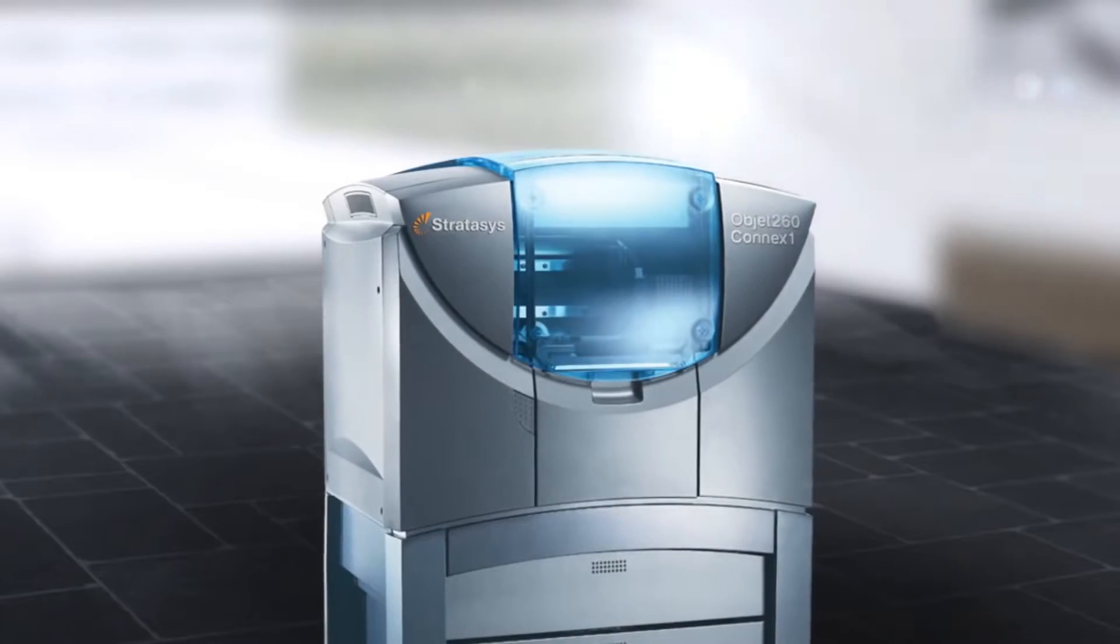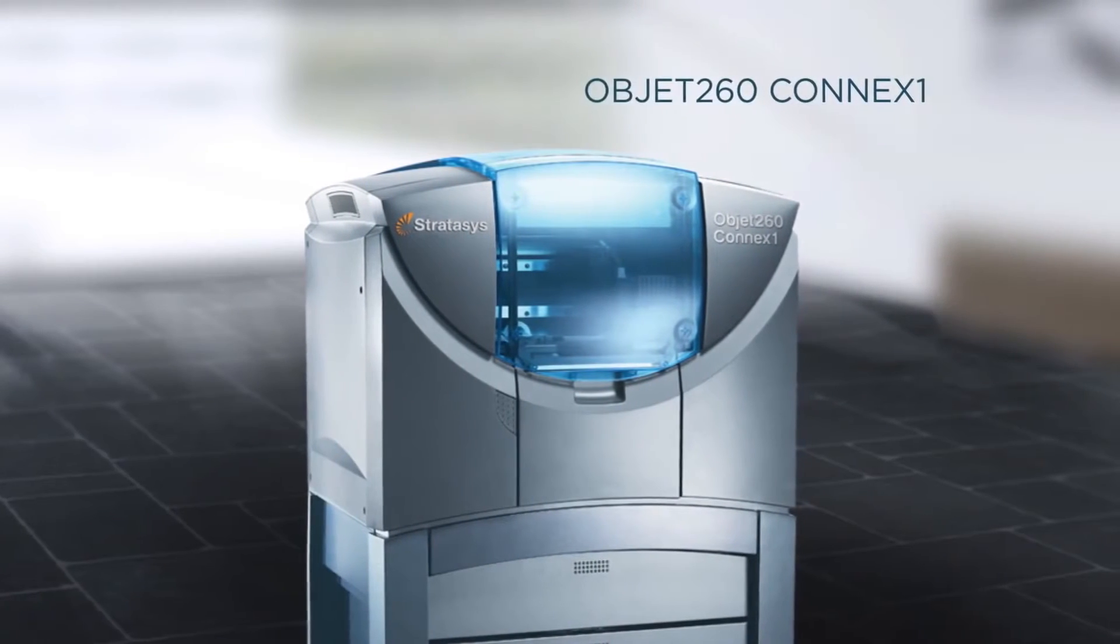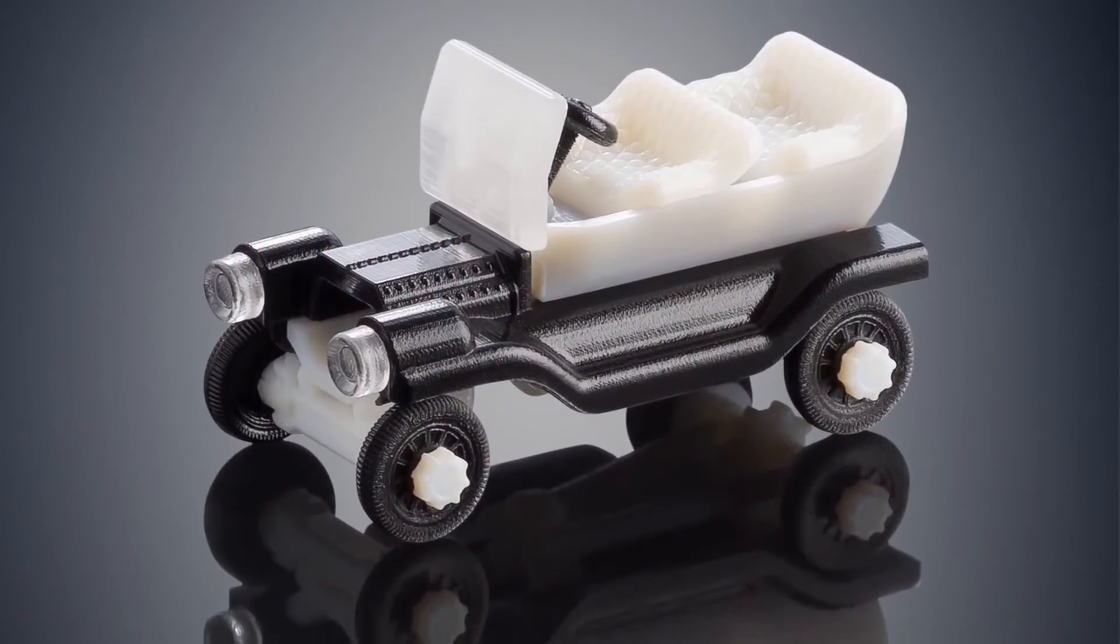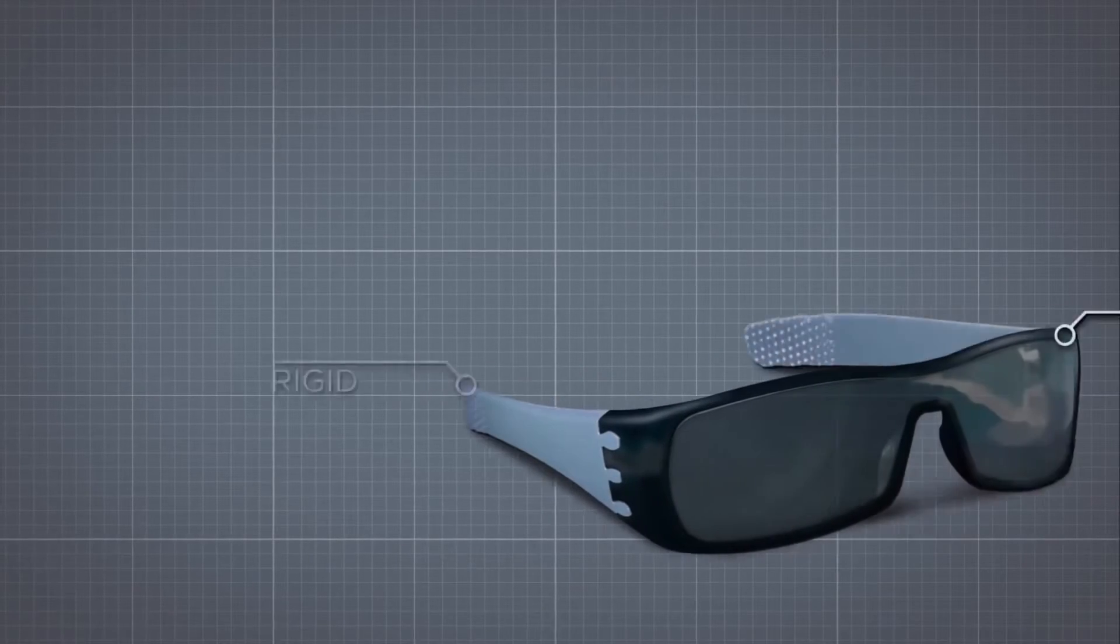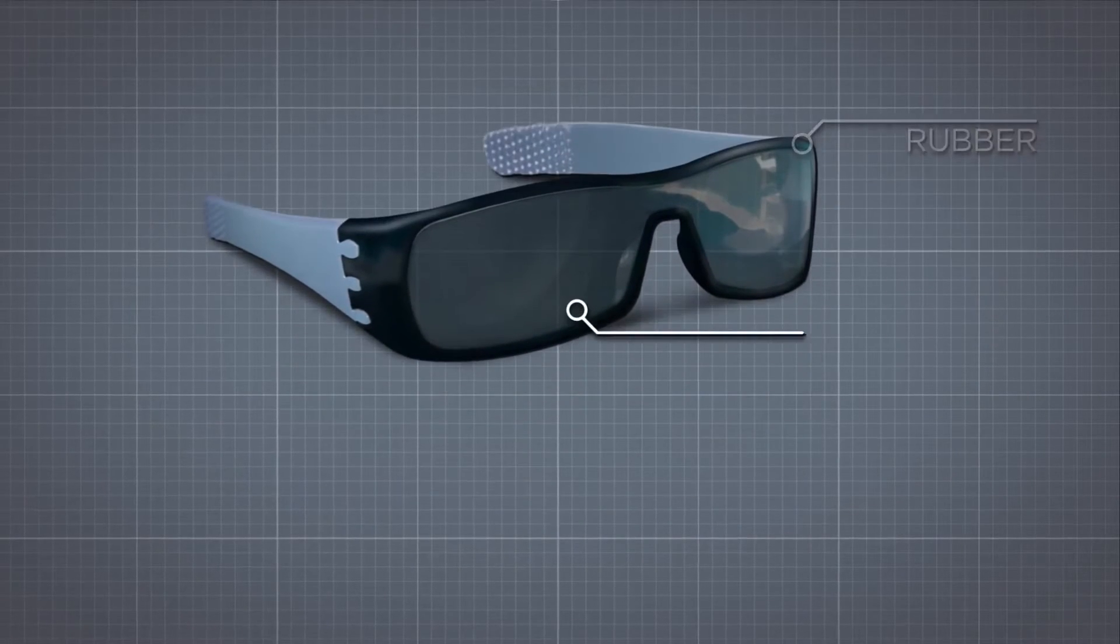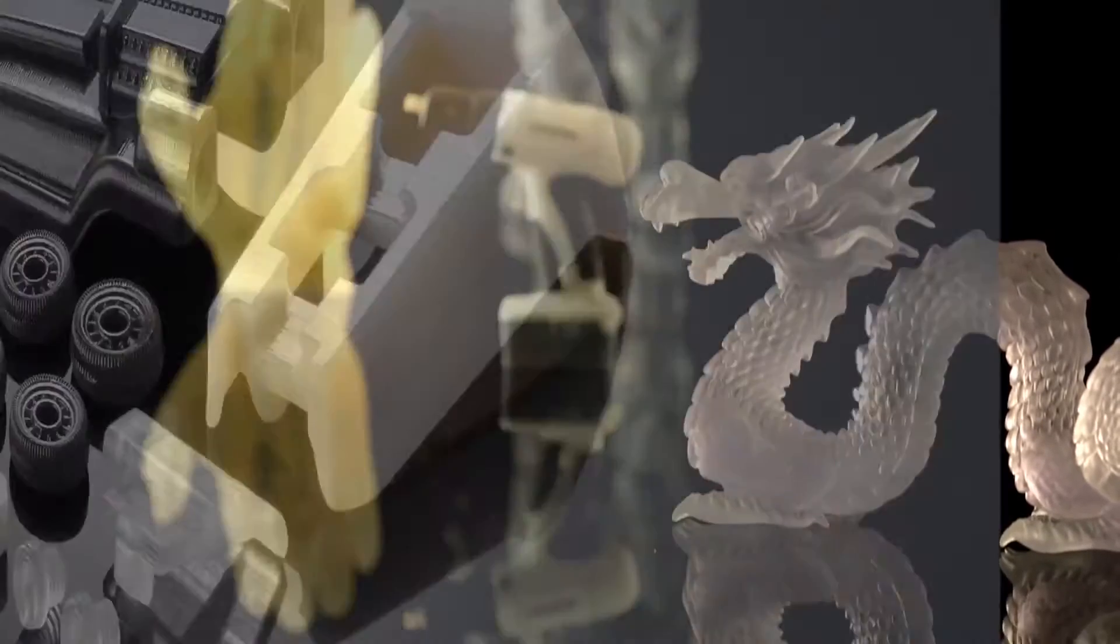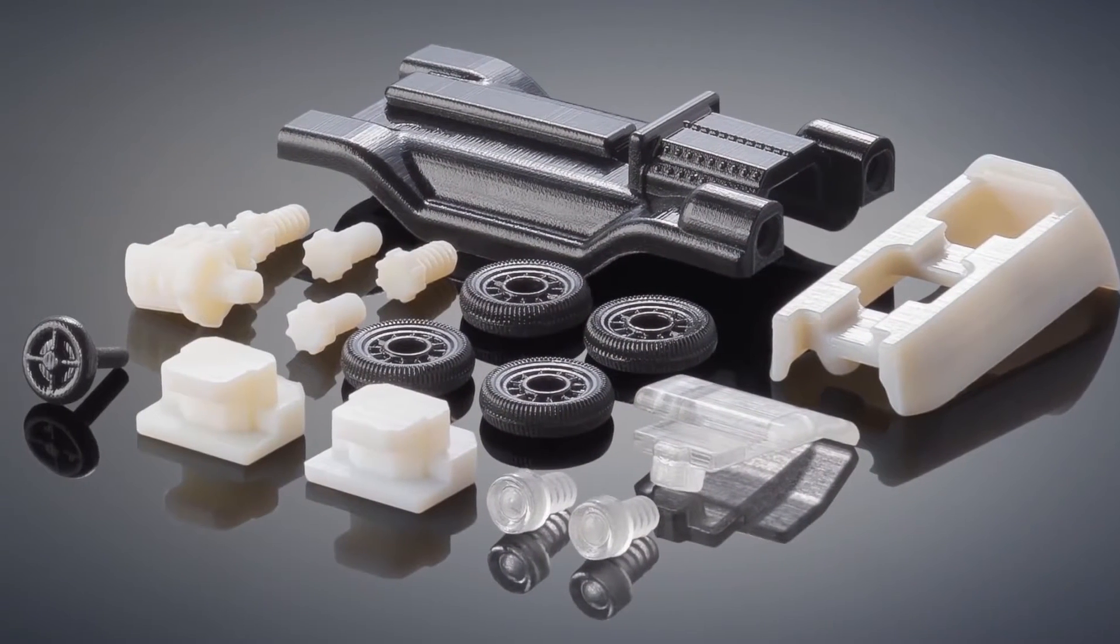The Objet 260 Connex 1 is your entry point into triple jetting technology. This 3D printer can build multi-material models that combine up to three base resins such as rigid, rubber, clear, opaque or high temperature with no assembly required. Or print a variety of parts from three materials in a single job.